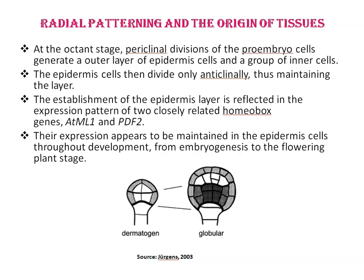Next is radial patterning and the origin of tissues. In Arabidopsis, the radial pattern is established successively starting from the periphery. At the octant stage, periclinal division of the pro-embryo cells generates an outer layer. You can see this in the dermatogen stage — it generates outer cells of the epidermis and a group of inner cells. Epidermis cells then divide only anticlinally, thus maintaining this epidermis layer.